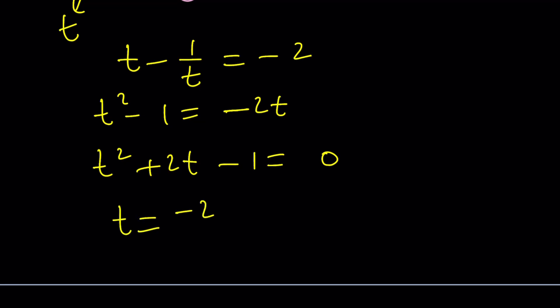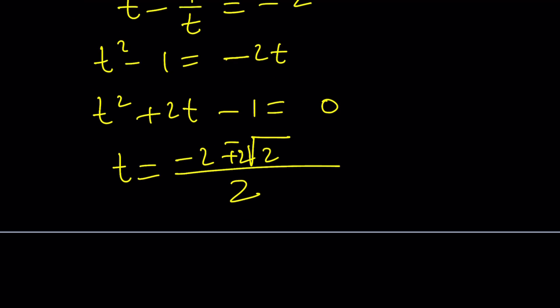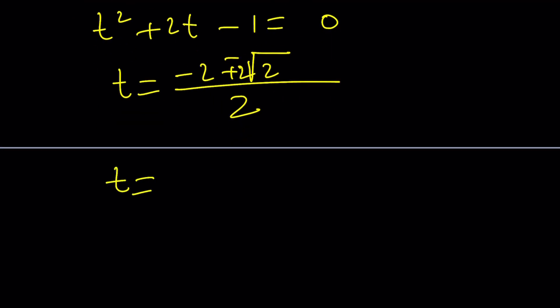But you can complete the square if you want. But I'm going to use the quadratic formula. Negative b plus minus the square root of b squared minus 4ac, which is 4 plus 4, for 8. The square root of 8 is 2 root 2. And that is divided by 2. Everything can be divided by 2. I can write t as negative 1 plus minus root 2.